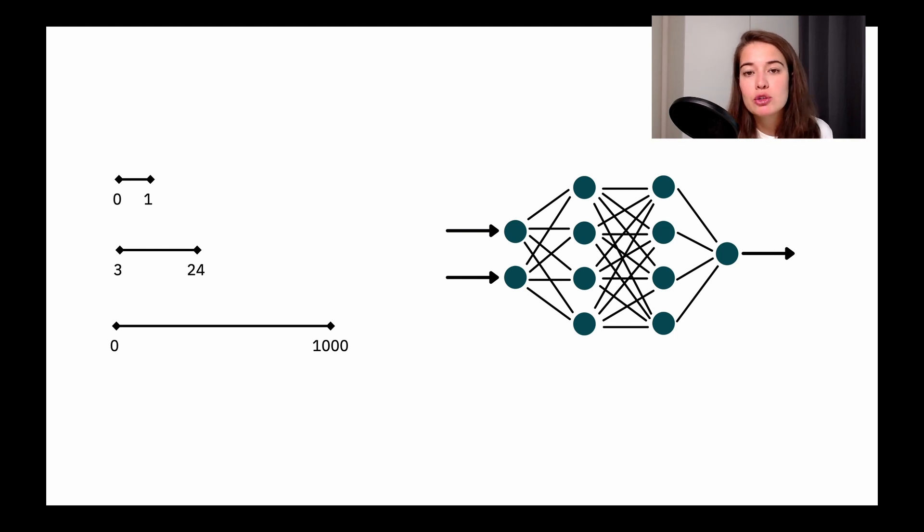So normalization is something that we do normally before we pass the inputs to our neural network. If this is our neural network, it's going to accept two inputs and then it's going to calculate things in a hidden layer and then give us an output. We need to scale things down or scale things to the same scale before we give it to the neural network. So let's say we have